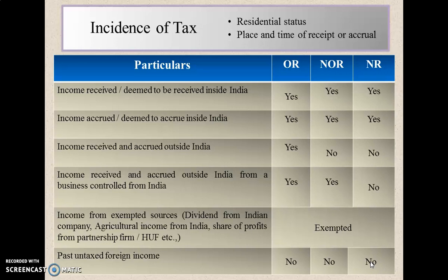To sum up: income which is either received or earned inside India — any one condition satisfied is enough — is taxable for all three types of residents. If the income is both earned and received outside India, it is taxable only for Ordinarily Resident. Income earned and received outside India from a business controlled from India is taxable for Ordinarily Resident and Not Ordinarily Resident. Income from exempted sources is not taxable for all three types. Past untaxed foreign income is also not taxable for all three types of residents.